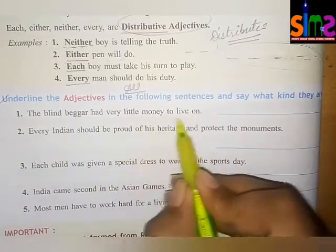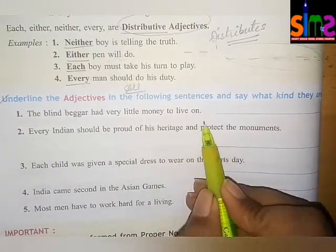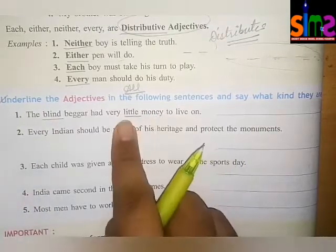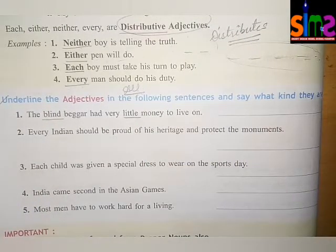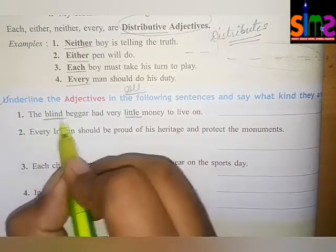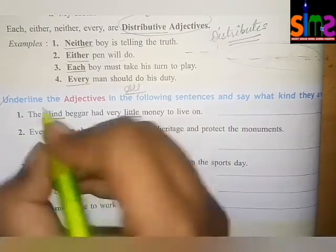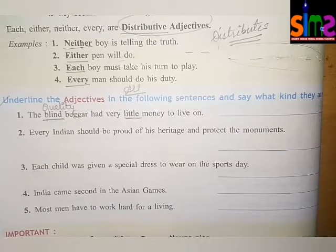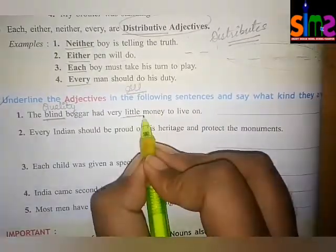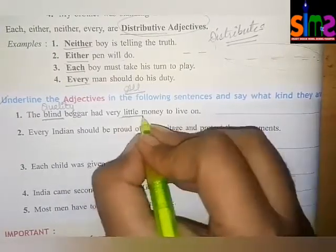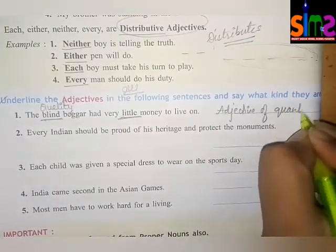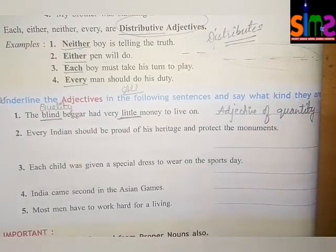First sentence: 'The blind beggar had very little money to live on.' The adjectives here are 'little' and 'blind.' We are not considering 'blind' because it is an adjective of quality, and we only have three types to judge here. 'Little' describes money with no fixed quantity, so we underline 'little' and write adjective of quantity.